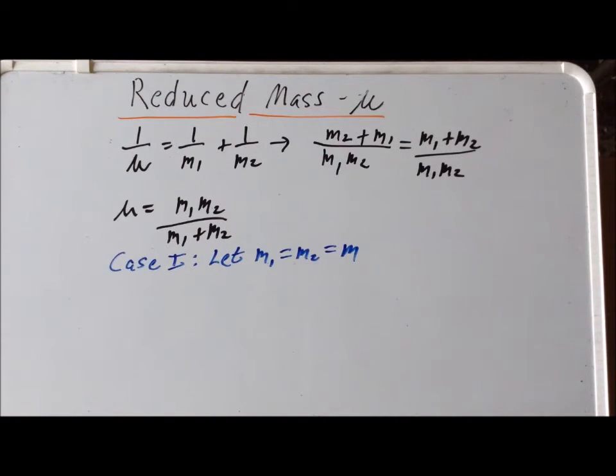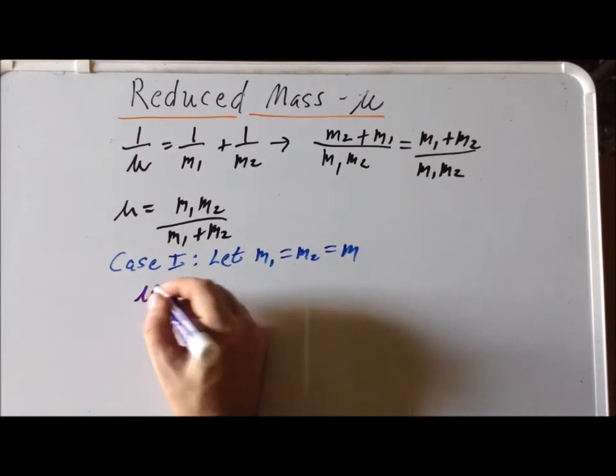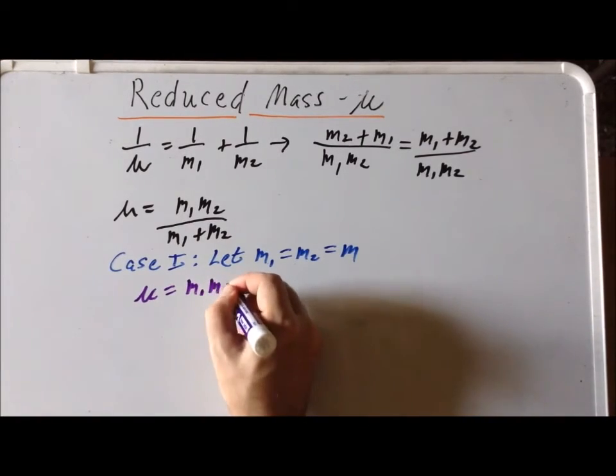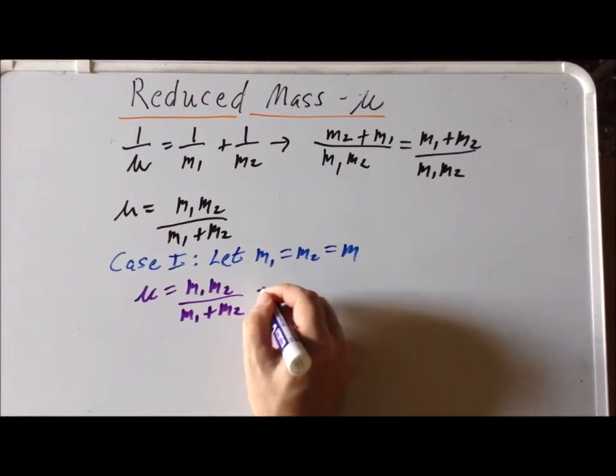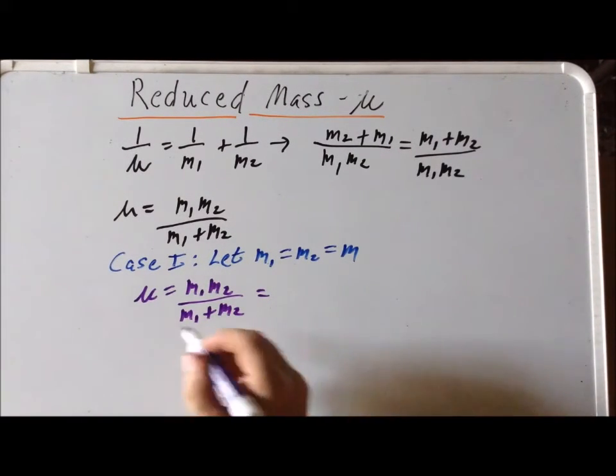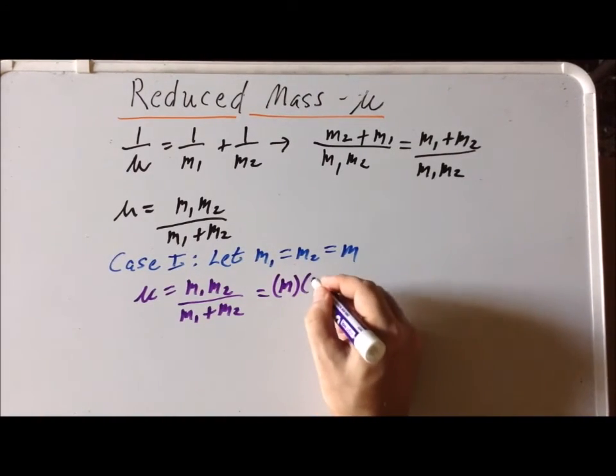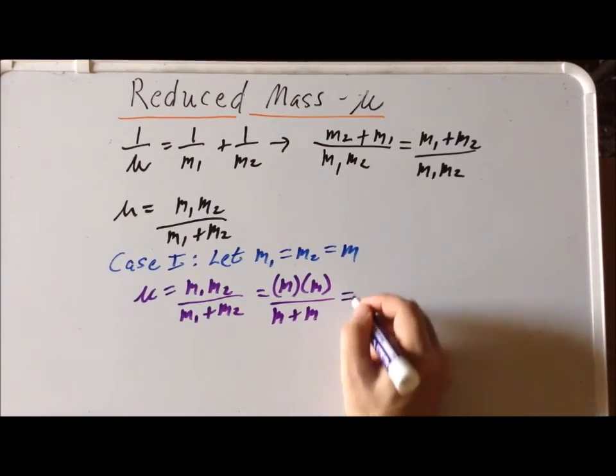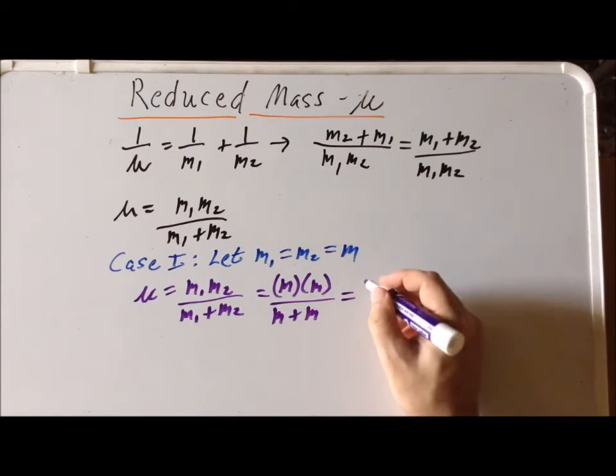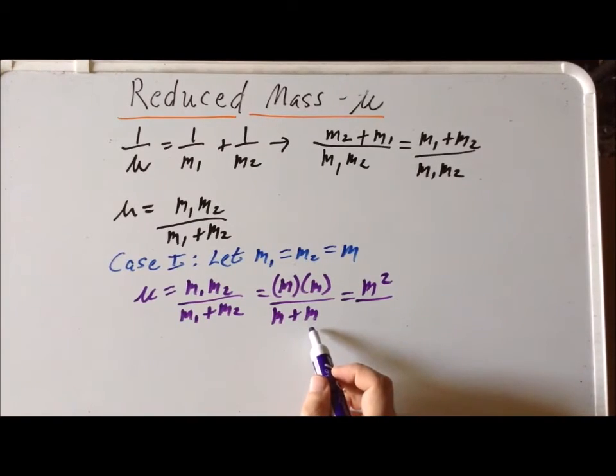So let's see what that gives us for the reduced mass of this particular system. Recall it's M1 times M2 divided by M1 plus M2. But both M1 and M2 are equal to M. So the numerator becomes M times M, and the denominator becomes M plus M. M times M is M squared for the numerator, and we have 1M plus 1M and the denominator becomes 2M.